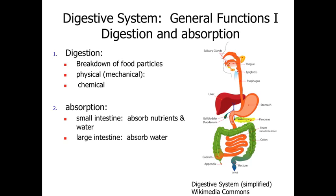When we take a look at the digestive system to start out with, we'll look at some general functions associated with this. The digestive system, by definition, is going to be involved with digestion of food particles. Its primary function is going to be the processing and the bringing in of food particles to be used by the body — the cells of the body — as both an energy source as well as raw material.